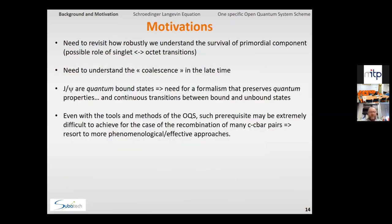Then this brings me to my motivation. Obviously, there is a need to revisit how robustly we understand the survival of the primordial component. So we also need to understand the coalescence in the late time. Is it something that is really instantaneous? We observe this memory and, of course, all of this should be done taking into account the fact that J/psi, of course, quantum bound states, so we need a formalism that preserves the quantum properties. And while even the more advanced methods, rigorous methods in open quantum systems, they are probably still at the stage where they cannot deal with all the many cc-bar pairs that we formed in the nucleus collisions. So we need to resort at some point to phenomenological or effective approaches when we are specifically looking at cc-bar pairs.